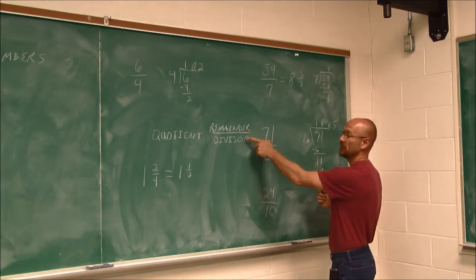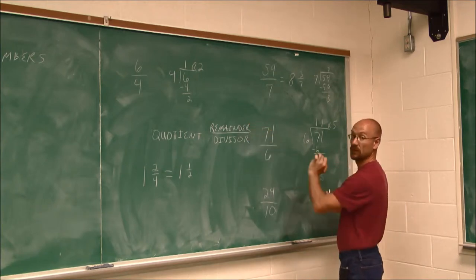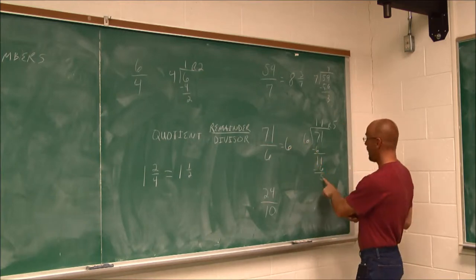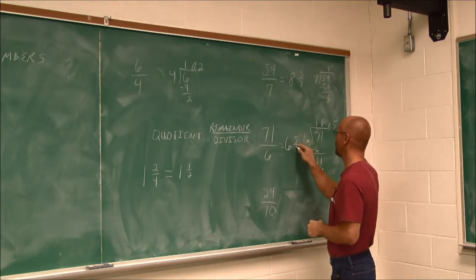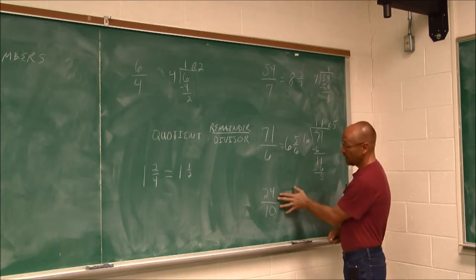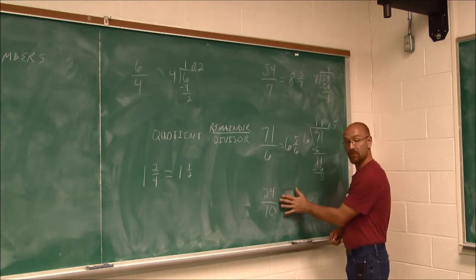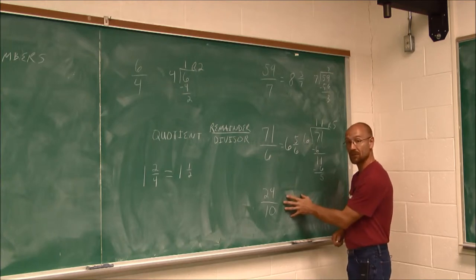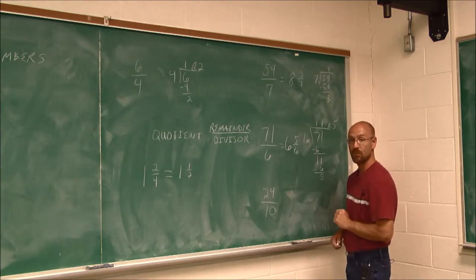We could write it as that remainder. But our quotient here says we're going to take the remainder over the divisor. So I have 11 and 5, my remainder, over the divisor, 5 sixths. So now we have the mixed number, 11 and 5 sixths. This one here, I'm going to let you attempt that one on your own. And always remember to reduce. That's my hint for this one.